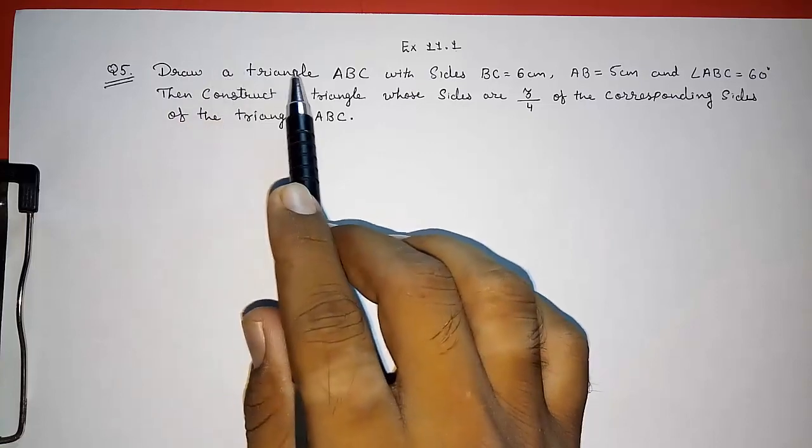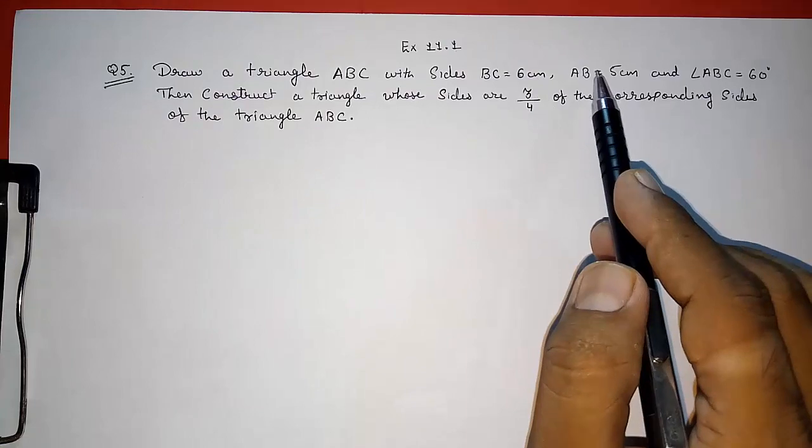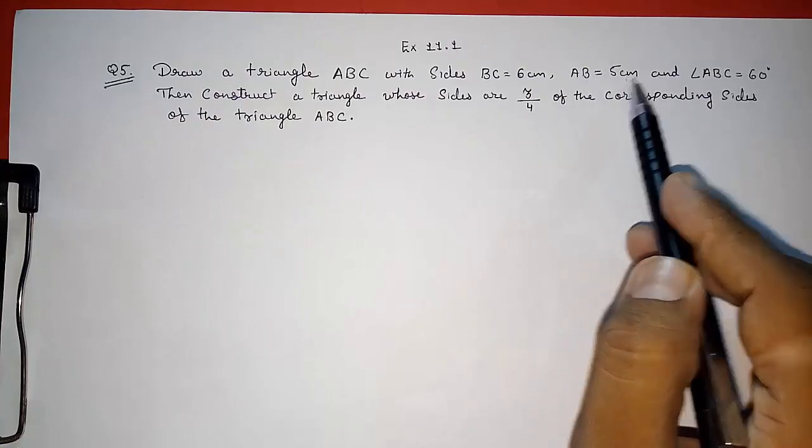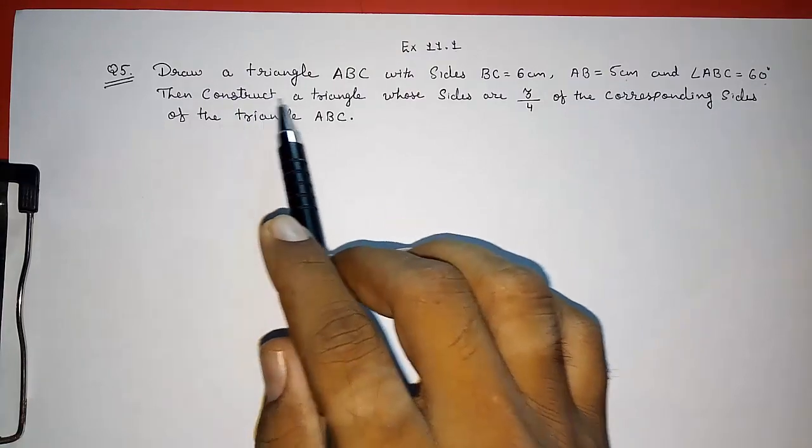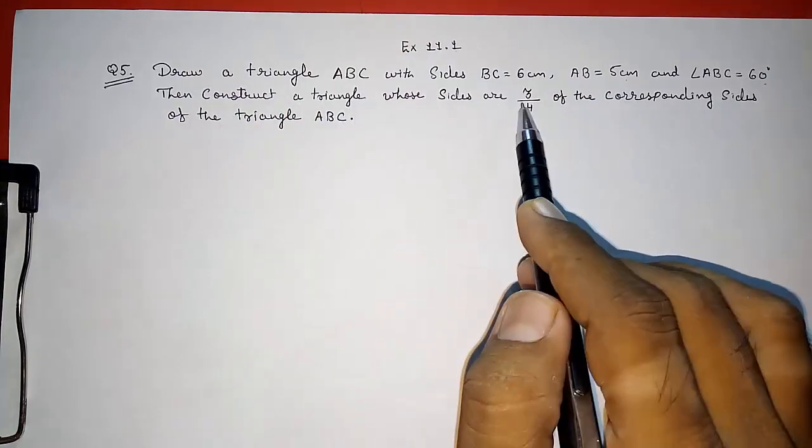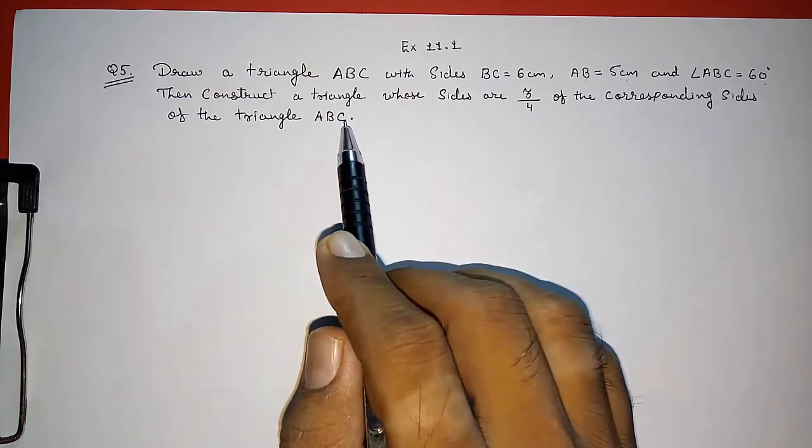Draw a triangle ABC with sides BC is equal to 6 centimeter, AB is equal to 5 centimeter and angle ABC is equal to 60 degree. Then construct a triangle whose sides are 3 by 4 of the corresponding sides of the triangle ABC.